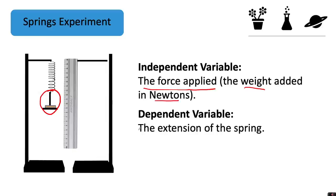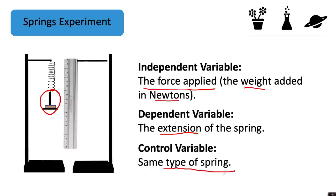Our dependent variable is the extension of the spring, and a really important control variable is that we use the same type of spring, because if you use springs made up of different metals, then they might be more stiff or more stretchy than others.